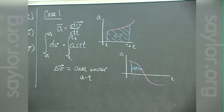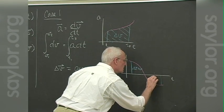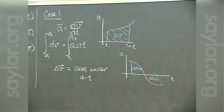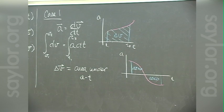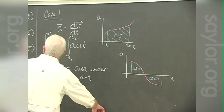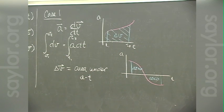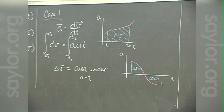Be careful: an acceleration that turns negative for a while still integrates in the positive and negative sense, carrying the correct physical meaning for what happens to the velocity. That's case one — straightforward integration of the a(t) curve.